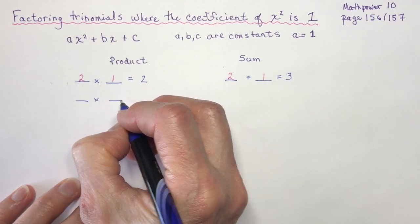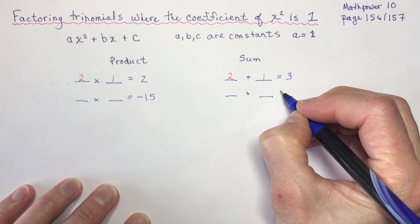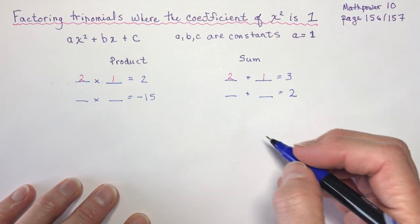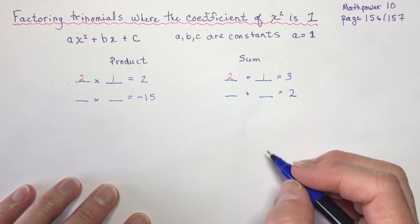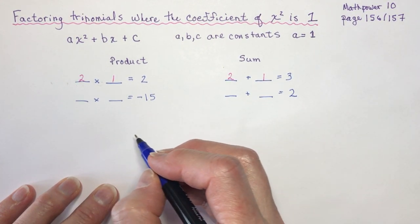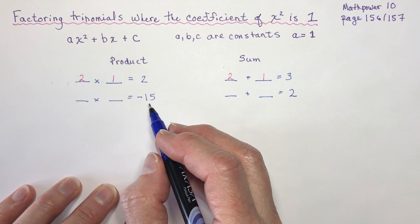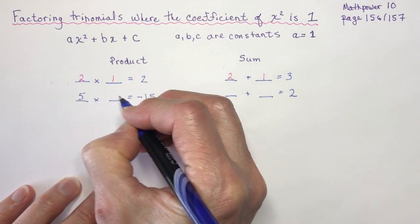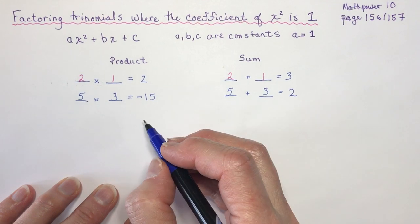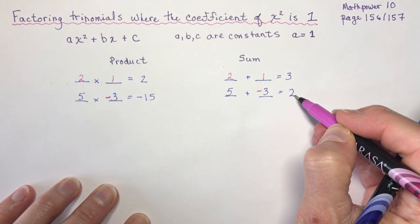I want two numbers that multiply to negative 15 and add up to positive 2. Because they add to a positive number, the larger number has to be positive. I know 5 times 3 is 15 and I can make a 2 out of 5 and 3. So the 3 has to be negative: 5 and negative 3 give a product of negative 15 and a sum of 2.